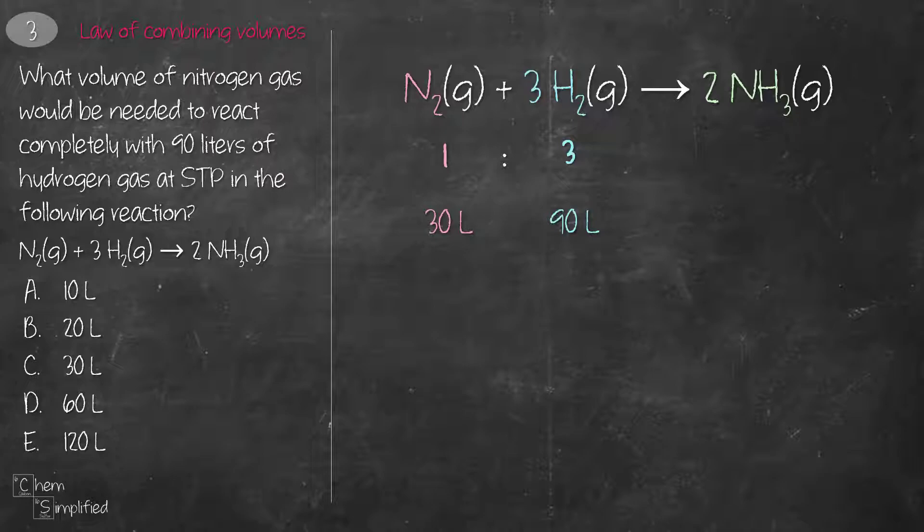If this is hard for you to see the math, we can set it up using dimensional analysis to find the volume of nitrogen. We start with the given 90 liter of hydrogen, multiply, draw a line across, and then we place 3 liter of hydrogen at the bottom, and then we place the 1 liter of nitrogen at the top. The liter of hydrogen cancels out, and that gives us 30 liter of nitrogen.